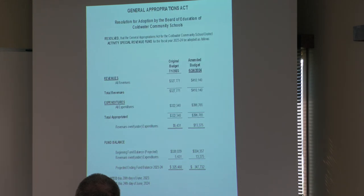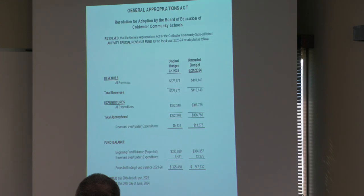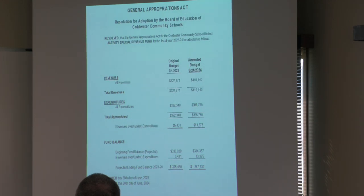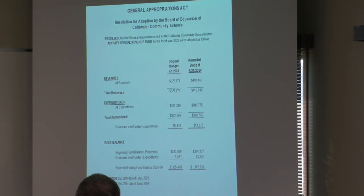The activity fund is a student activity fund based on money coming in from students doing fundraisers or other activities in the building, and you expect them to spend those funds down — class funds, athletic activity funds. This fund is quite fluid. The projected fund balance is $347,732.